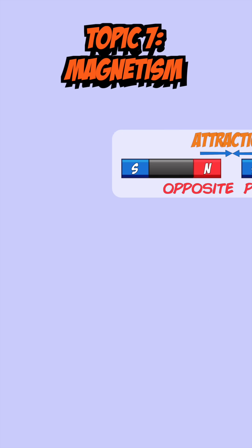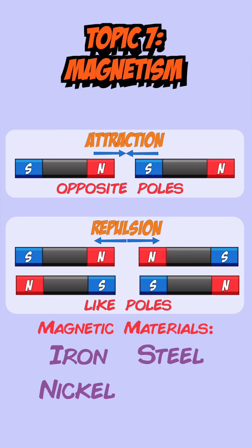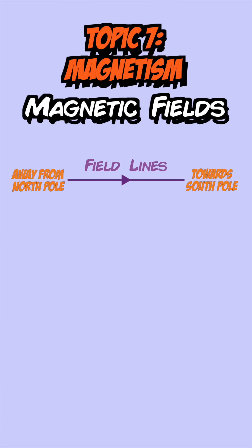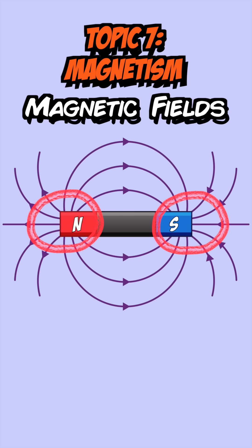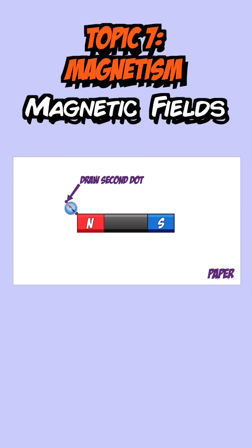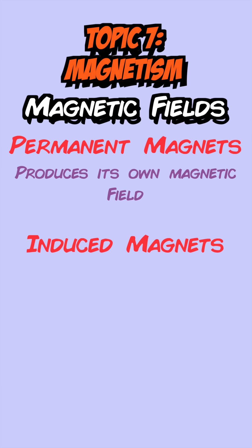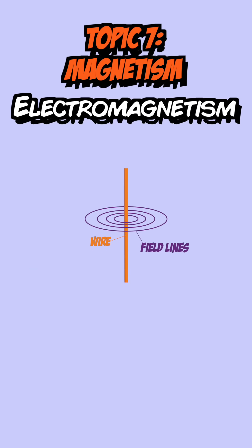In magnetism, opposite poles attract and like poles repel. Magnets are made of magnetic materials: iron, steel, nickel or cobalt. A magnetic field is a region where a magnet, magnetic material, or current-carrying wire experiences a force, represented by field lines with arrows. Close field lines indicate a strong field. A bar magnet's field is strongest at the poles. Magnetic fields can be observed using a compass to plot field lines. A permanent magnet produces its own field; an induced magnet becomes magnetized near a permanent magnet, forming opposite poles. When current flows through a wire a magnetic field of concentric circles is produced.